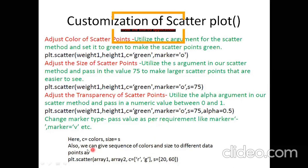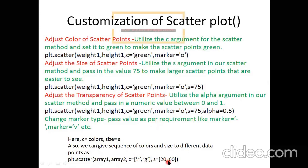Note: 'c' is used for colors and 's' is used for size. If you do not want to use the acronyms, you can directly write 'color' and 'size'. You can pass sequences for both. You can also combine them in one statement — plt.scatter(array1, array2, color=..., s=...) — the order of named arguments does not matter since you are explicitly naming them.